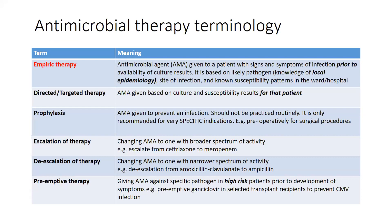In terms of terminology, empirical therapy refers to antimicrobial agents that are given when there are features of infection but prior to the availability of the patient's culture results. It's based on what the most likely pathogens are — this is where the knowledge of local epidemiology comes in — what the site of infection is, and the known susceptibility patterns in that unit or specific hospital or practice. Directed or targeted therapy, on the other hand, is when antimicrobial therapy is based on actual culture and susceptibility results for an individual patient.